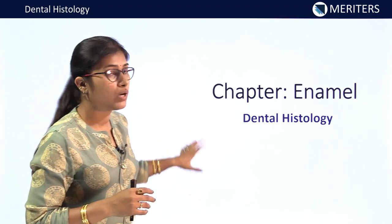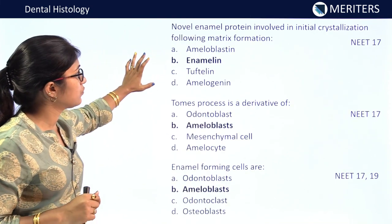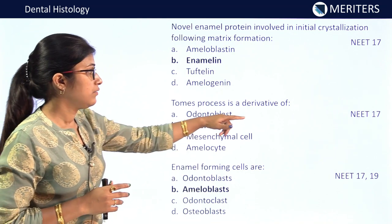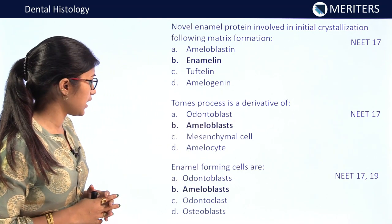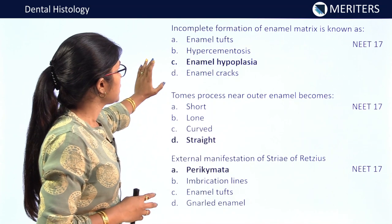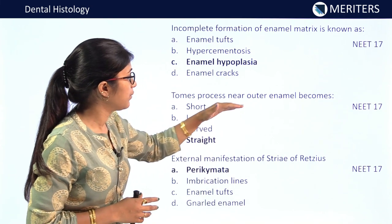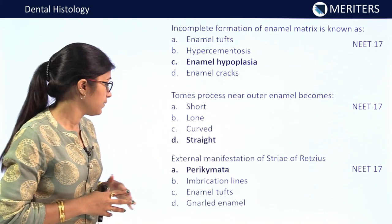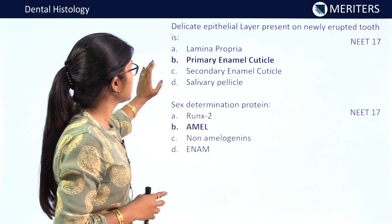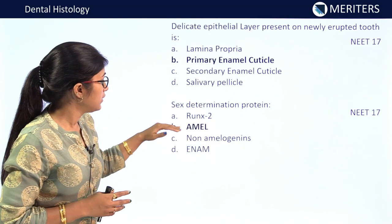For enamel: the novel enamel protein involved in initial crystallization following matrix formation is amelogenin — NEET 2017. Tomes' process is a derivative of ameloblasts — NEET 2017. Enamel formation cells are ameloblasts — asked twice in NEET 2017 and NEET 2019. Incomplete formation of enamel matrix is known as enamel hypoplasia — NEET 2017. Near outer enamel, Tomes' process becomes straight — NEET 2017. External manifestation of striae of Retzius is perikymata — NEET 2017.